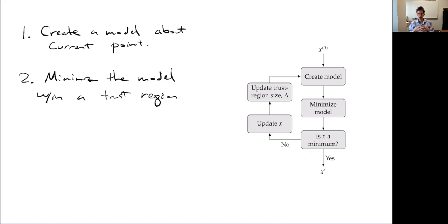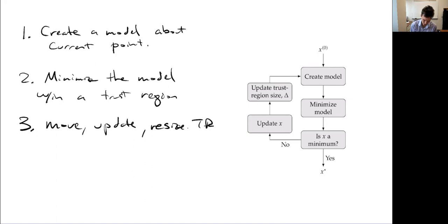We'll talk about how to size this boundary. There are many ways to define it, but the most common is a sphere — a circle in 2D, a sphere in 3D, a hypersphere in higher dimensions — just a radius that we define. Once we choose this point, we move, update, and resize the trust region as needed. So again, we repeat two steps: create a local model, then find the minimum of that model within some region.